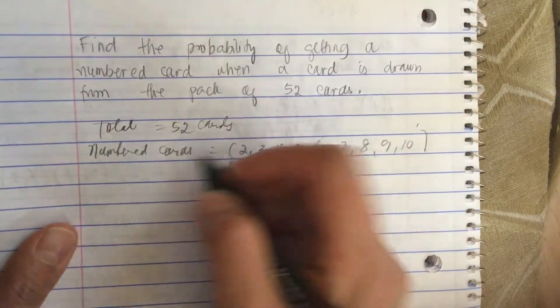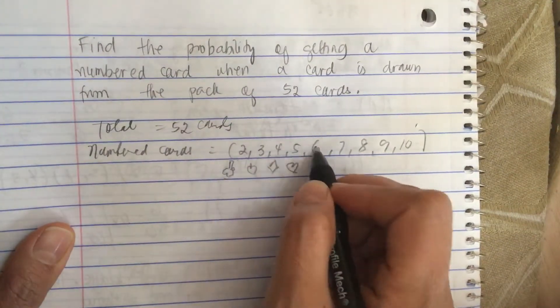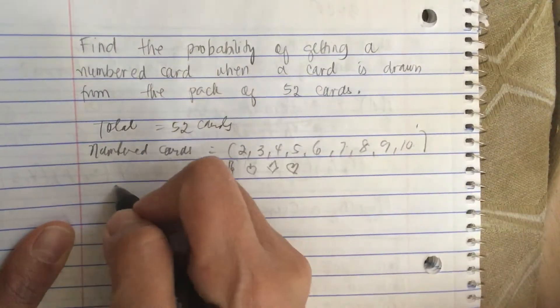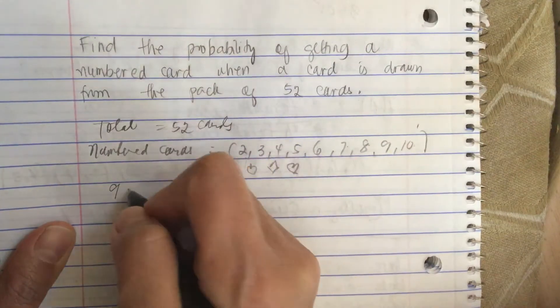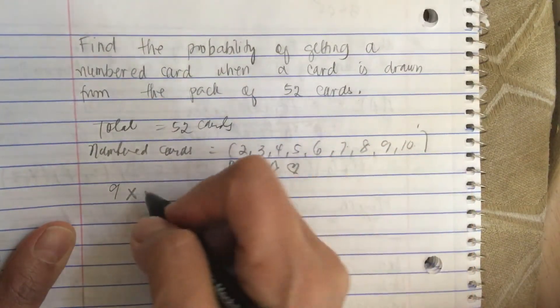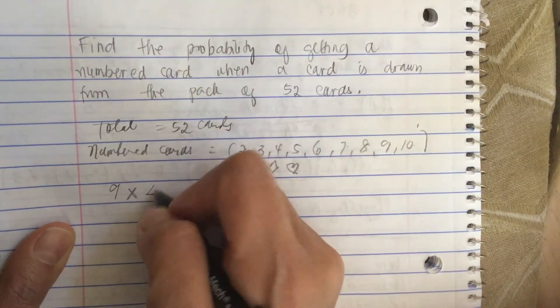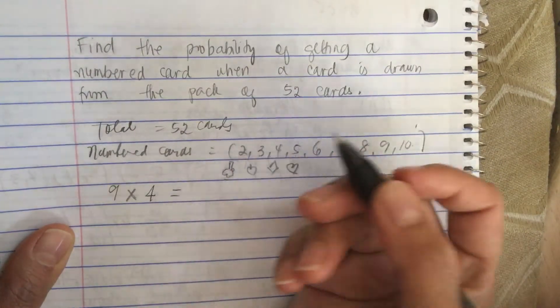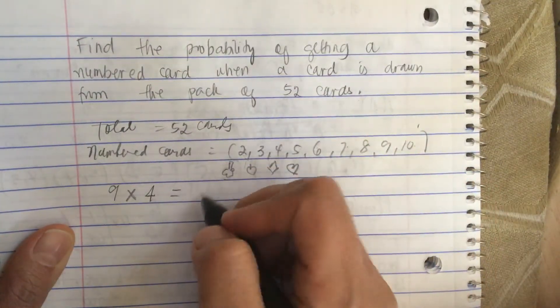So that means 1, 2, 3, 4, 5, 6, 7, 8, 9—so we find there are 9 numbered cards. Then we multiply this by 4, so this is equal to 36.